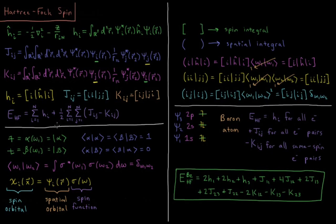So far we've done all this without discussing spin. Electron spin comes into play as follows: spin-up is represented as alpha(omega_1) for electron 1, or ket alpha; spin-down is beta(omega_1). The overlap of alpha-star with alpha, or beta-star with beta, is 1 — these spin functions are normalized. The integral of alpha-star times beta is 0, as is beta-star times alpha, so these spin functions are orthonormal. A spin integral is represented by Dirac brackets, and equals the Kronecker delta — 1 if omega_1 and omega_2 are equal, 0 if different.